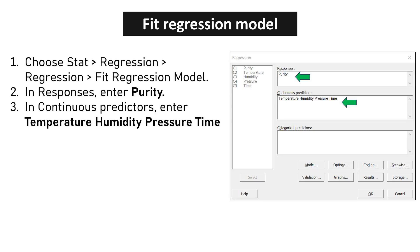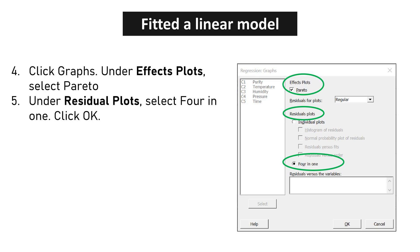Choose Stat > Regression > Regression > Fit Regression Model. In Responses, enter purity. In Continuous Predictors, enter temperature, humidity, pressure, and time. Click Graphs. Under Effects Plots, select Pareto. Under Residual Plots, select 4 in 1. Click OK.